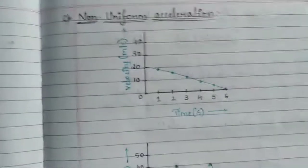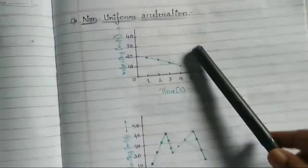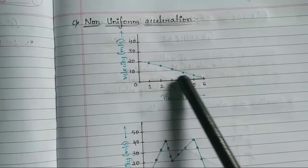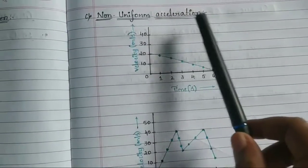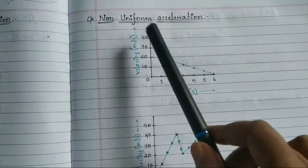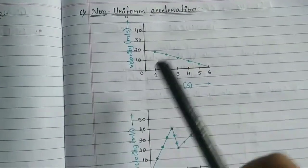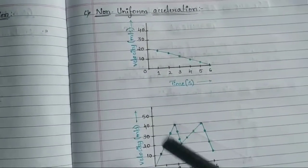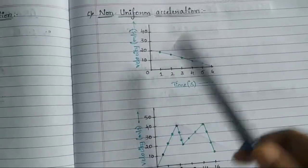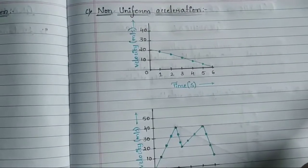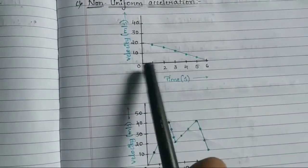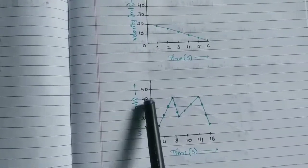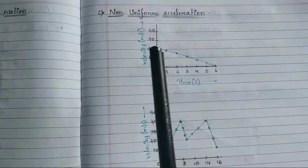For non-uniform acceleration, two example graphs are shown. There is no particular fixed graph shape for non-uniform acceleration — it can take any form, because the acceleration is varying every time. Time is on the x-axis and velocity is on the y-axis for both examples, but non-uniform acceleration can take numerous shapes since it is not fixed.